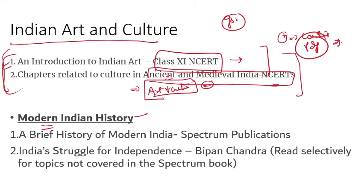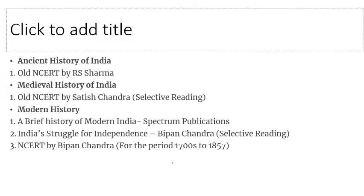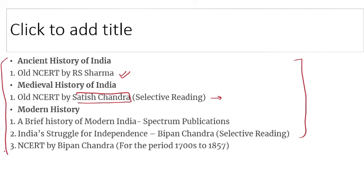For Modern History, you have to take A Brief History of Modern India by Spectrum Publications, and Indian Struggle for Independence by Bipin Chandra — you can read selectively for topics not covered in the Spectrum book. Starting from that, you take an idea, then watch my videos, purchase my module, and I will provide some PDFs. For Ancient History: Old NCERT by R.S. Sharma. For Medieval History of India: Old NCERT by Satish Chandra — you will have to take selective reading.